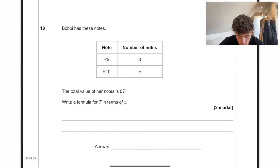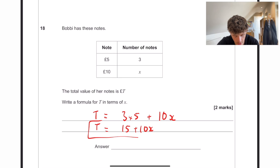Bobby has these notes. The total value of her notes is t pounds. Write a formula for t in terms of x. So t is equal to 3 times 5 plus 10 times x. So we can write this as 15 plus 10x, and that is our final answer.